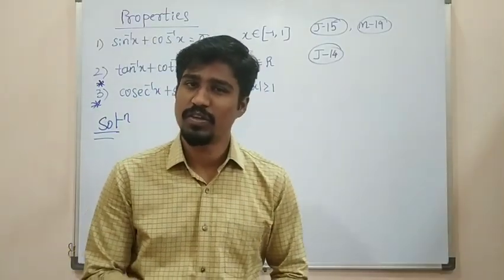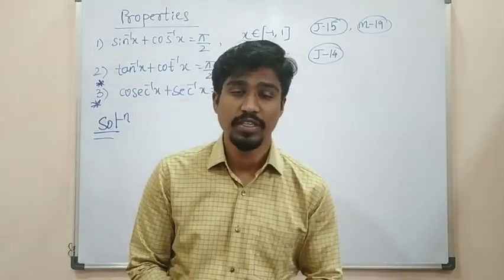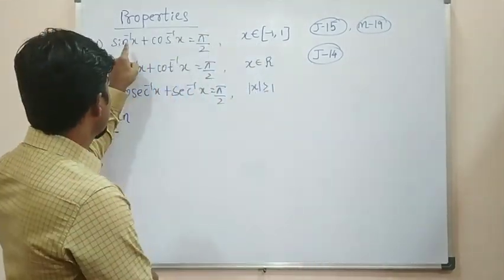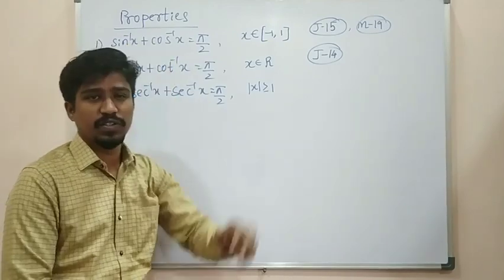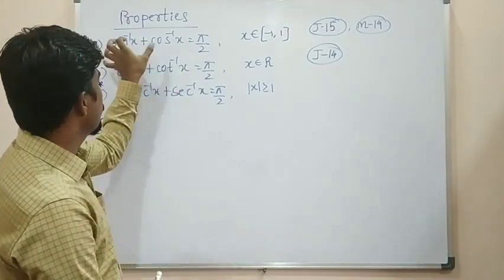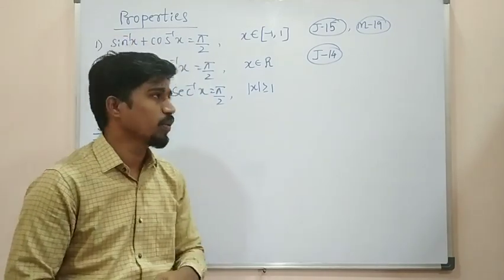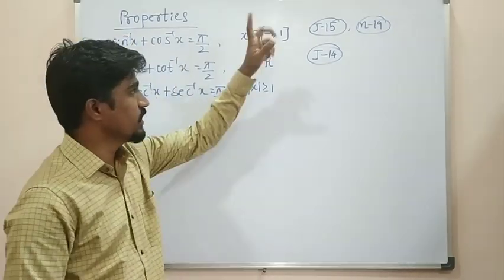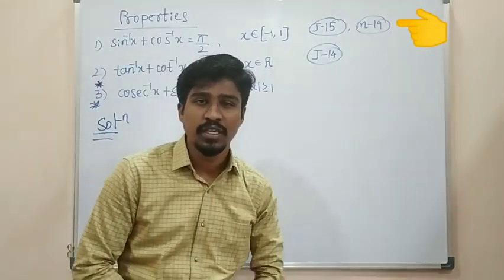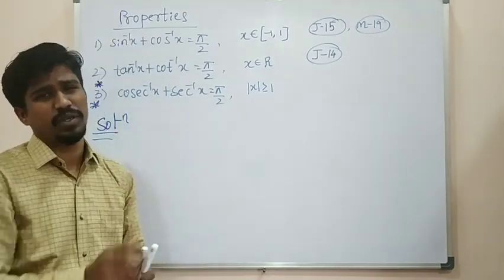This set of properties is also available and important. The first property is: sin inverse x plus cos inverse x is equal to π/2. I will prove that sin inverse x plus cos inverse x is equal to π/2. This question was asked in July 2015 and March 2019. Very important for two marks. That is very simple.